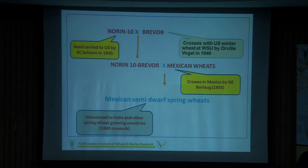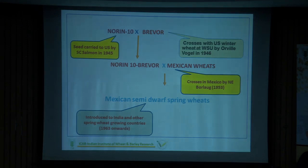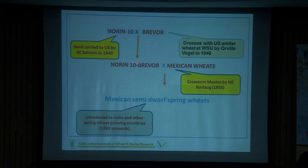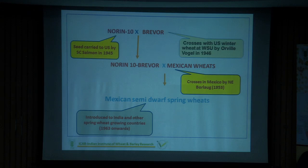During World War Two, a fellow named Salman transported this Norin gene from Japan to the US — Oliver Vogel. In 1946, Vogel made crosses of this Norin 10 with Brevor, and these crosses were very promising. At that time, CIMMYT had started working in a mission mode with the Rockefeller Foundation. Dr. Vogel gave seeds of these crosses to Norman Borlaug, who is the father of the Green Revolution. He started crossing with the Mexican spring wheats. Vogel worked with winter wheat and Mexican wheat was spring wheat, so this gene was crossed into these lines to develop semi-dwarf wheat varieties which were introduced into India in the early 1960s.